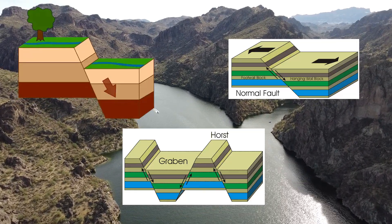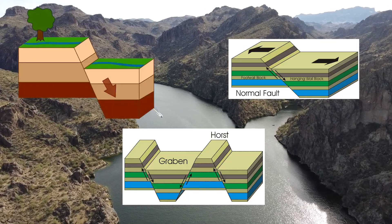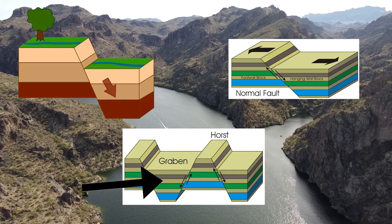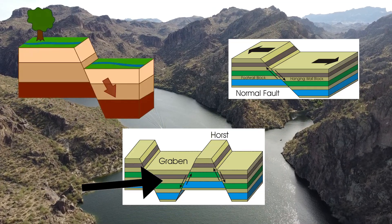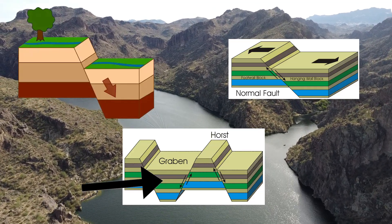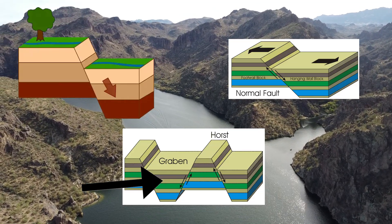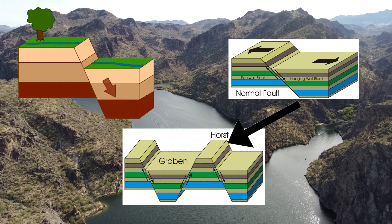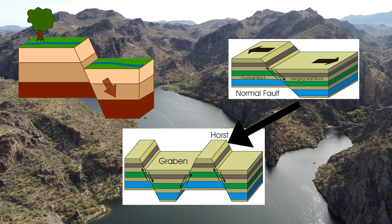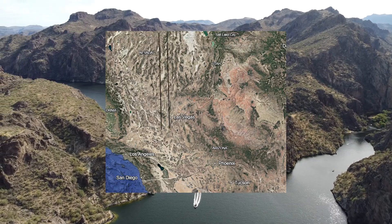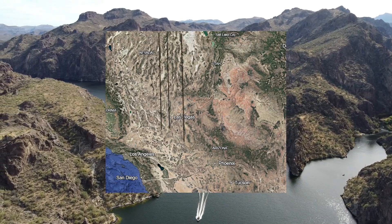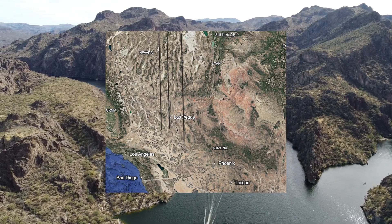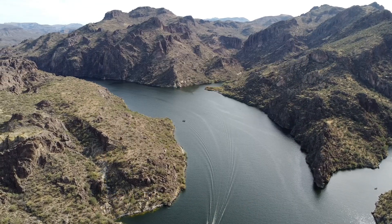Areas of the crust in between these faults are dropped down and these are known as the grabens. The others are raised up and these are known as the horsts. This pattern generates the very linear looking mountain terrain that we can observe on any satellite map of the region today.